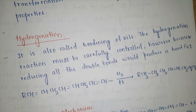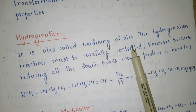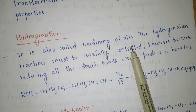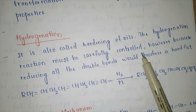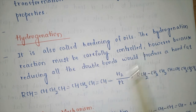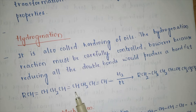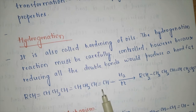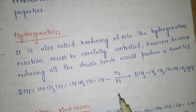Hydrogenation, also called hardening of oils, converts the double bond system into a single bond. The hydrogenation reaction must be carefully controlled because if all double bonds are reduced, the result is a hard fat which is not useful. We need to control the reduction so that we get a useful consistency, not a completely hard product.